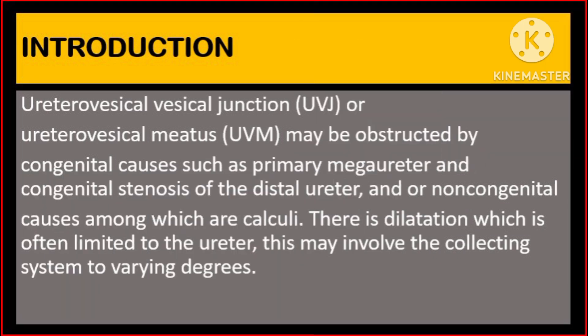The ureterovesical junction, or ureterovesical meatus, may be obstructed by congenital causes such as primary megaureter and congenital stenosis of the distal ureter, and/or non-congenital causes, among which are calculi.